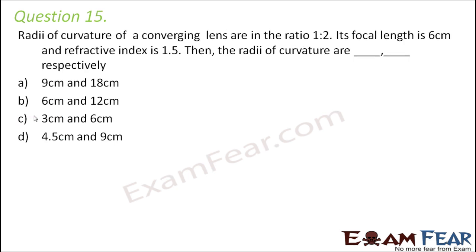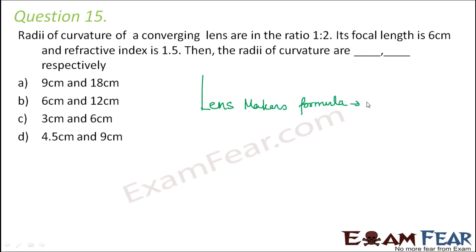Question number 15: the radii of curvature of a converging lens are in the ratio 1:2. Its focal length is 6 centimeters and refractive index is 1.5. Find the radii of curvature. We are dealing with a convex lens, so we will use the lens maker's formula: 1/f = (μ − 1)(1/R₁ − 1/R₂).